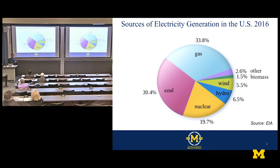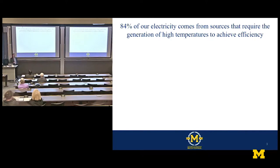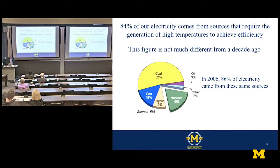It may be interesting to note that if you look at the electrical energy generation in the U.S. last year, and you look at how it's distributed according to source, you'll notice that gas, coal, and nuclear amount to about 84% of our electricity, with hydro, wind, biomass, and solar filling out the rest. That's a large percentage of our electricity coming from very high-temperature systems. If you look at a decade ago, back in 2006, it was about 86% from these same sources.